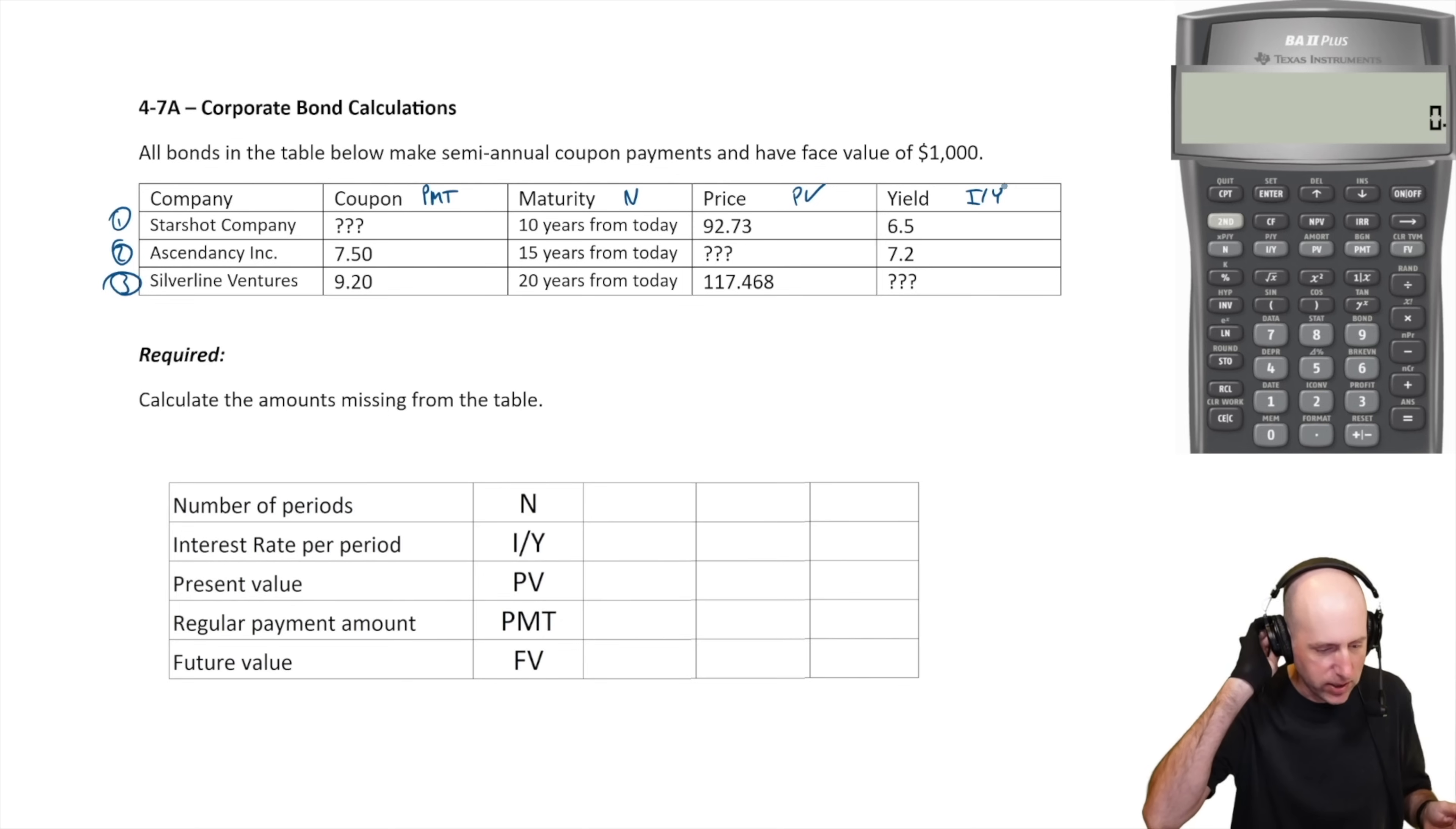We're asked to fill in the missing information. Starshot's missing the coupon, so we'll call this company one - it's missing the PMT. Company two, Ascendancy, is missing the PV, the price. And company three is missing the yield. That's what we're going to solve for. The starred things are what's missing, everything else we should know about these companies.